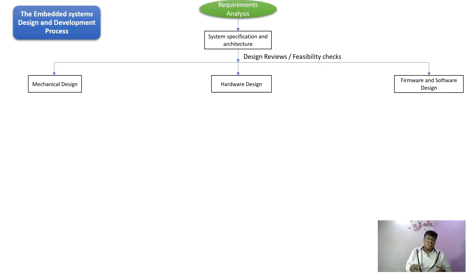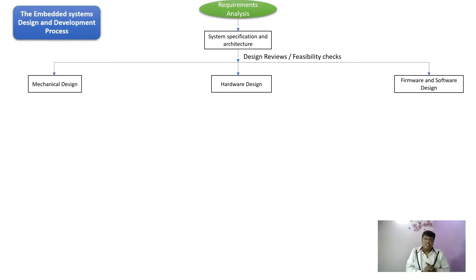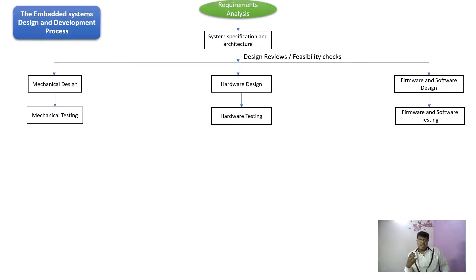In the next stage, the designing process happens, split into three parts: mechanical design, hardware design, and firmware and software design. Mechanical design includes CAD design for inner and outer parts. Hardware design covers PCB board and circuitry design. Firmware and software design covers the system logic, algorithms, and instruction sets. Once designs are done, they undergo sanity testing and unit testing in the early stage to ensure no bugs propagate to later stages.